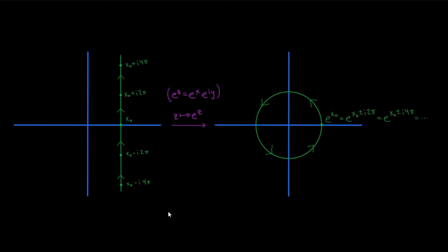Let's understand what this function does to different regions in the complex plane. For a vertical line, a point of the form x₀ + iy maps to e^(x₀) · e^(iy), which lands on the circle of radius e^(x₀) centered at the origin. As y increases from −∞ to ∞, you go around and around this circle counterclockwise. Every time y is an integer multiple of 2π, you land on the point e^(x₀).